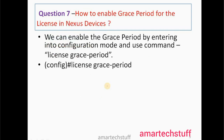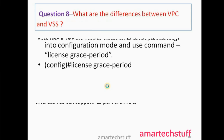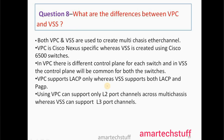Question number seven: How to enable the grace period for the license on Nexus devices? As mentioned earlier, Nexus devices require licenses to enable features. Licenses have a certain time period, and once they expire you need a grace period if you're not immediately upgrading the licenses. To enable the grace period, enter configuration mode and use the command 'license grace-period'. For most Nexus switches, the grace period is about 120 days, though it may vary by device or license type.